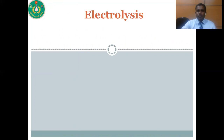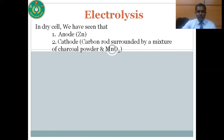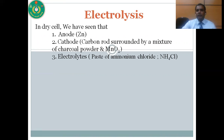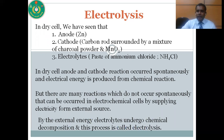So now what is electrolysis? In a dry cell, the anode is zinc, the cathode is a carbon rod surrounded by a mixture of charcoal powder and manganese dioxide, and the electrolyte is the paste of ammonium chloride. In this reaction, zinc spontaneously donates electrons when the circuit is complete, and manganese dioxide at the cathode accepts those electrons. This is a spontaneous process. But many reactions do not occur spontaneously and can be driven in an electrochemical cell by applying electricity from an external source. By applying external energy, electrolytes undergo chemical decomposition — this process is called electrolysis.